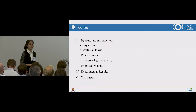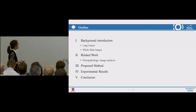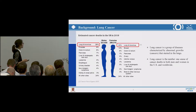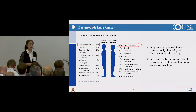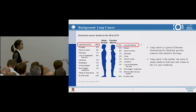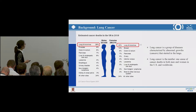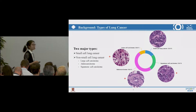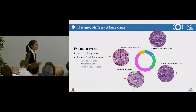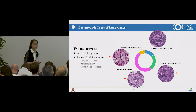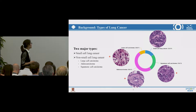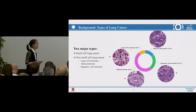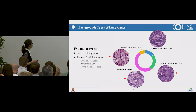I'm going to present our work in the following five sections. First, I'd like to give a brief introduction of the background. Lung cancer is one of the most commonly diagnosed cancers among people, and it has become the leading cause of cancer deaths in the U.S. Appropriate treatment for lung cancer patients primarily depends on the type, such as small cell and non-small cell lung cancer, and the latter can be further divided into several subtypes.